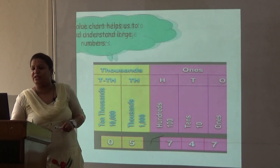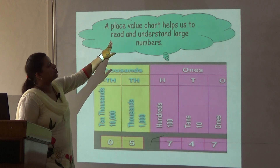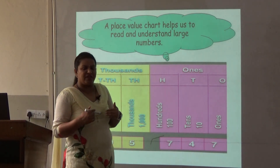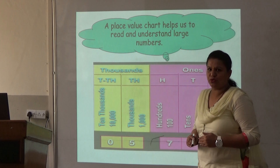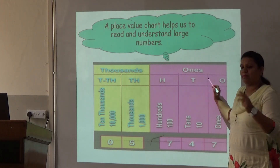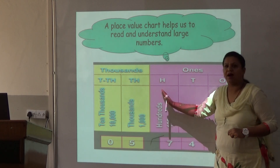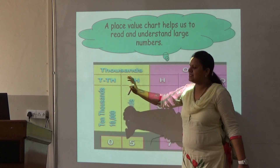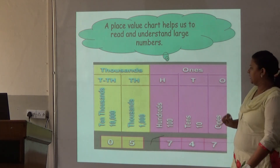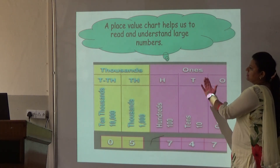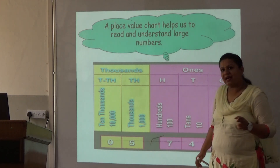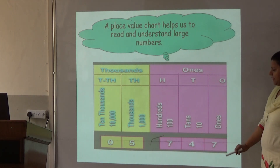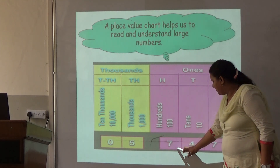This is your place value chart. A place value chart helps us to read and understand large numbers. There are families of numbers also. Like we have family members, numbers also belong to families. This is the 1's family — it has 3 members: 1's, 10's, and 100's. And then there is the 1000's family, which has 2 members: 1000's and 10,000's. Let us read the given number here: it is 5,747.